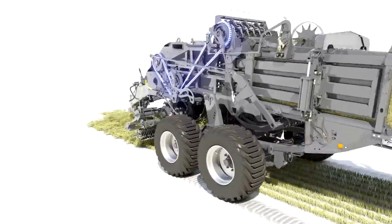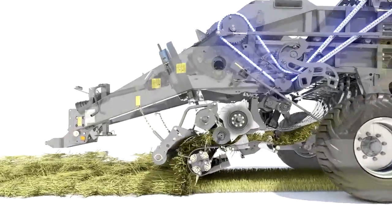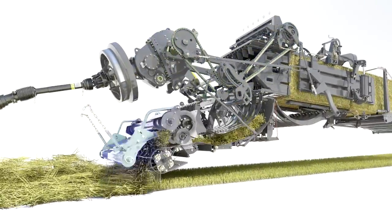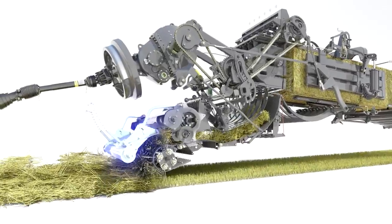The windrowed crop is gathered up by the high capacity pickup, with the roller windguard helping to smooth out any uneven lumps in the swath.